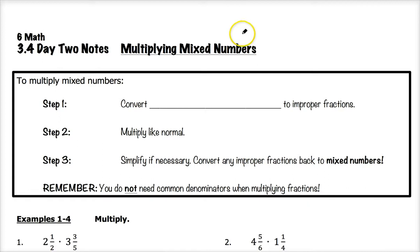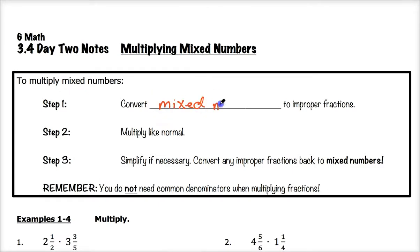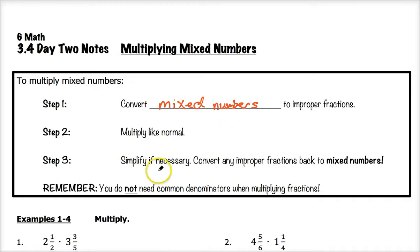To multiply mixed numbers it's sort of the same process as what we did for adding and subtracting mixed numbers. The first step is we want to convert those mixed numbers to improper fractions. Once your mixed numbers are improper fractions, then we multiply the numerators with the numerators and the denominators with the denominators. At the end we simplify if necessary and convert any improper fraction answers back to mixed numbers. A reminder: when we're multiplying we do not need common denominators.